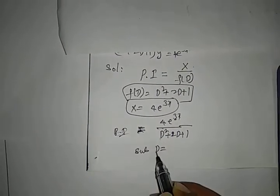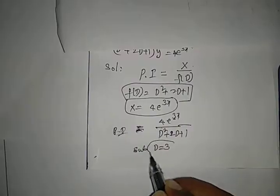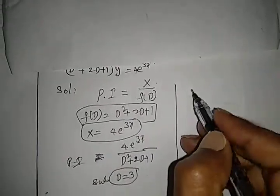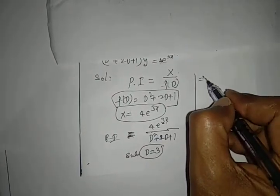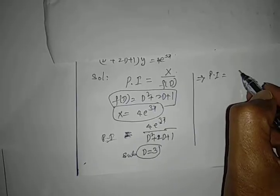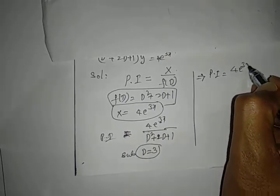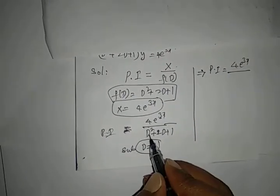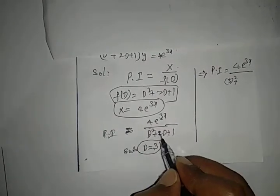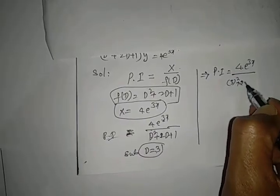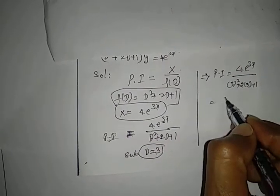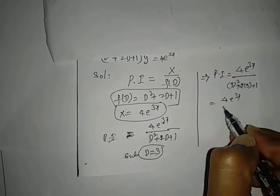PI = 4e^(3x)/(D²...). Since D = 3, we have 3² + 2(3) + 1. That equals 4e^(3x)/16.